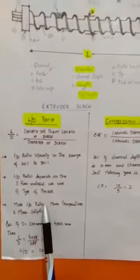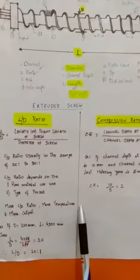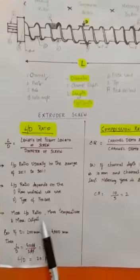More L by D ratio results in more temperature of the compound leading to more output.